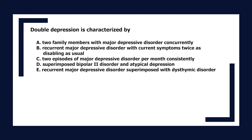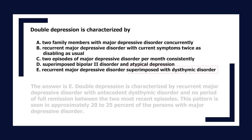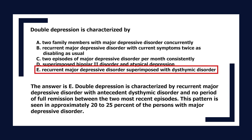Double depression is characterized by: A. Two family members with major depressive disorder concurrently. B. Recurrent major depressive disorder with current symptoms twice as disabling as usual. C. Two episodes per month consistently. D. Superimposed bipolar 2 disorder and atypical depression. E. Recurrent major depressive disorder superimposed with dysthymic disorder. The answer is E. Double depression is characterized by recurrent major depressive disorder with antecedent dysthymic disorder and no period of full remission, seen in approximately 20–25% of persons with major depressive disorder.